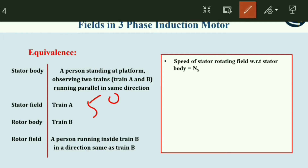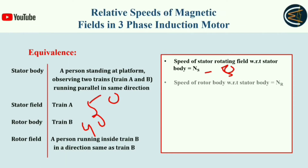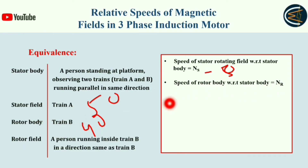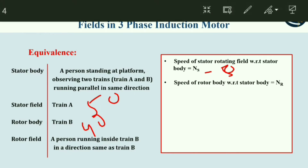For example, train A is running at 50 kilometers per hour and train B is running at 40 kilometers per hour. So NS equals 50. The next point: the speed of rotor body with respect to stator body is NR. The rotor body is nothing but train B, so NR equals 40.